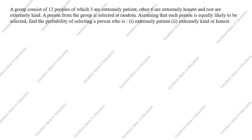Hi students, welcome to my channel Excellent Ideas in Education. Today we are going to solve this probability problem. A group consists of 12 people, of which three are extremely patient, other six are extremely honest, and the rest are extremely kind. A person from the group is selected at random, assuming each person is equally likely to be selected. Find the probability of selecting a person who is: first, extremely patient; second, extremely kind or honest.